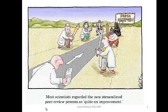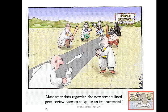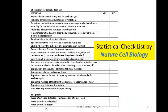In many other journals, you don't really know where the statistician is — they're probably shooting at you from the shadows. So it's very important to know where these reviewers are targeting. Today I'd like to introduce the Statistical Checklist by Nature Cell Biology.